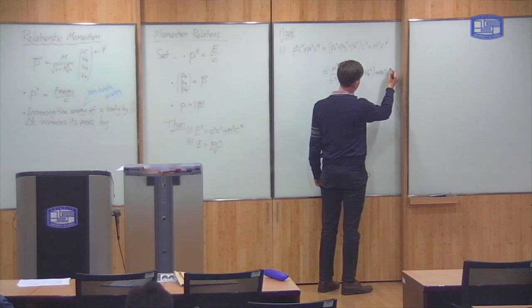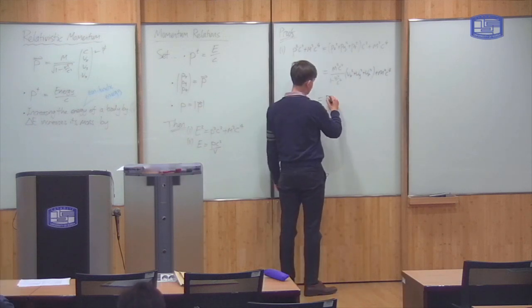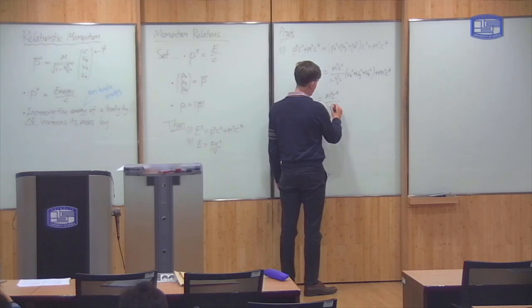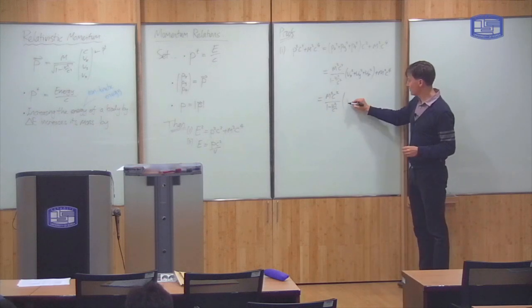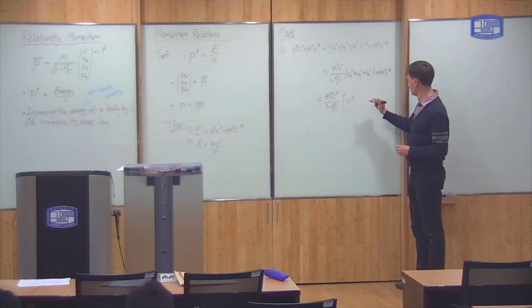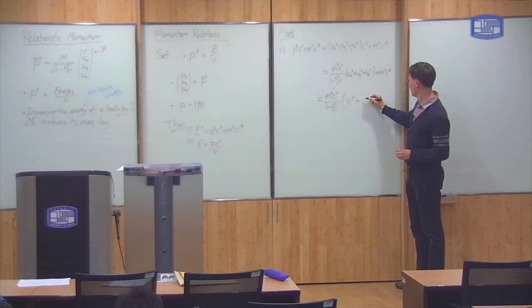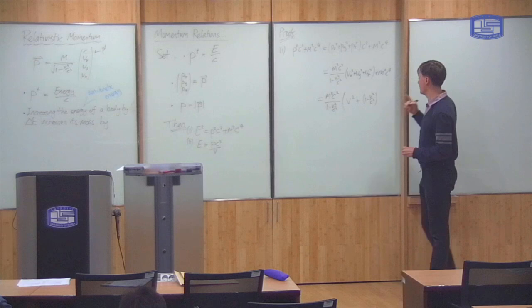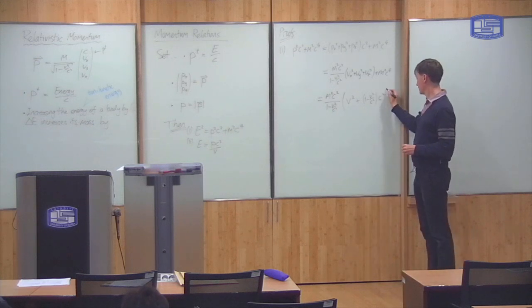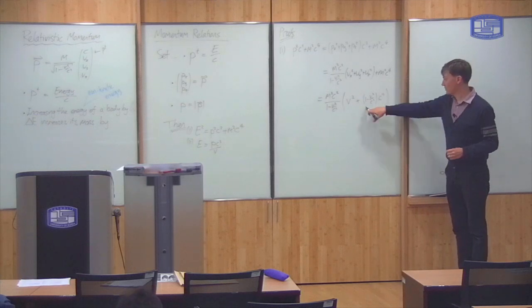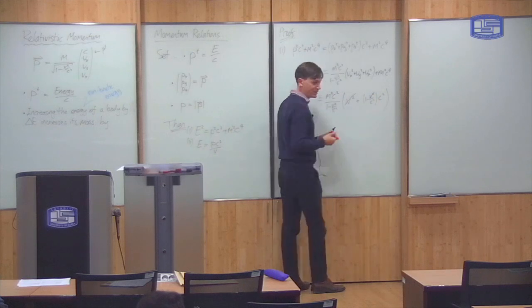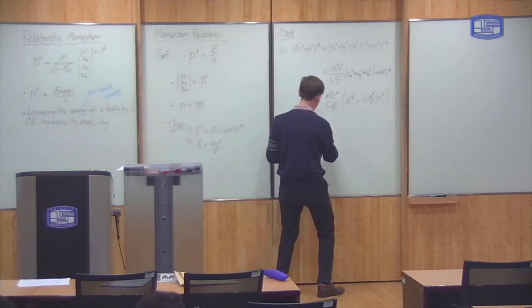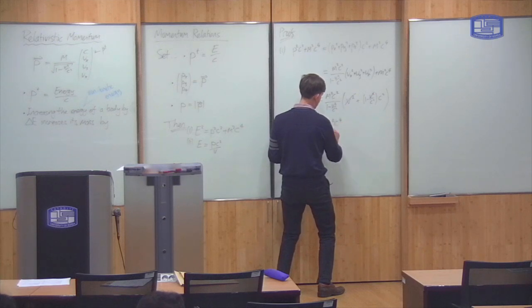And then again, plus m squared c to the fourth. But this is equal to m squared c squared over 1 minus v squared over c squared. I'll put everything into a common factor. So here you have v squared and here you have plus 1 minus v squared over c squared times c squared. So this term becomes that. And you see that the v's cancel. So this v squared here is going to cancel that v squared there.